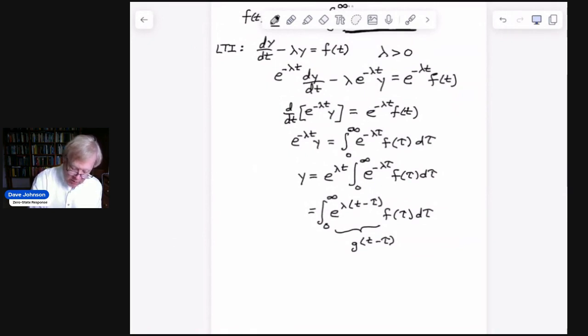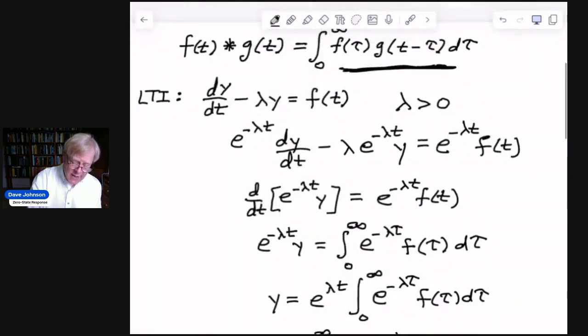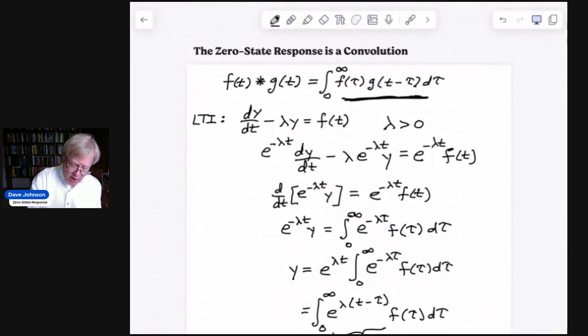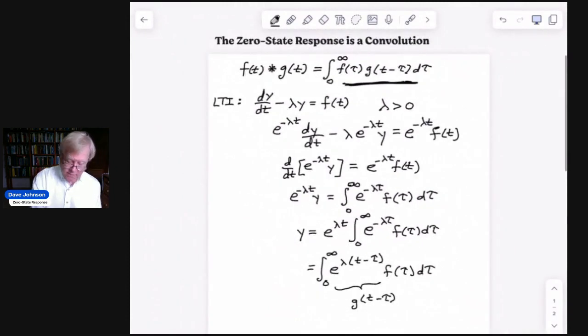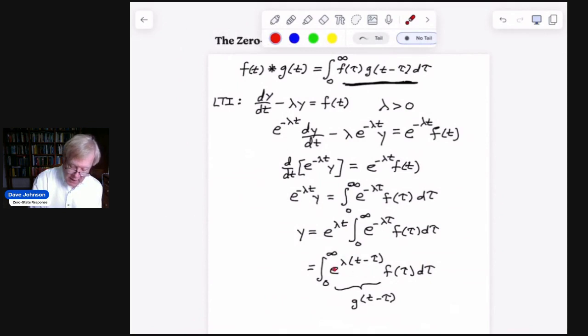And so, now what's interesting about that is that any linear system now can be thought of as a convolution of the input f(t) with something. Now, what is this something going to be? Well, based on our earlier video, we know that that's the impulse response of our system.